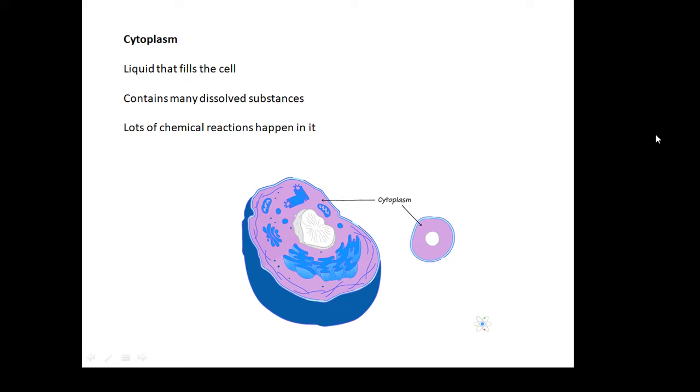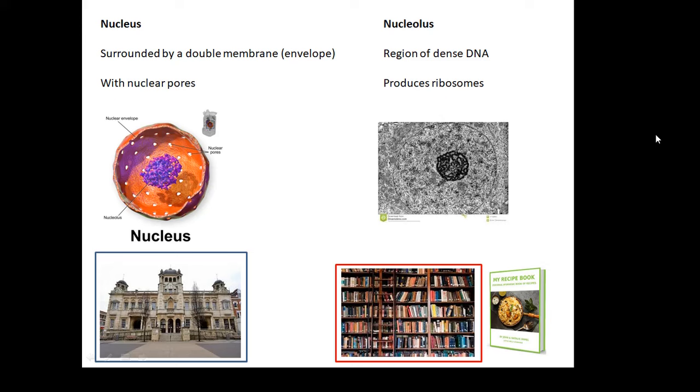The nucleus of the cell. If the cell is like a city, then the nucleus is the town hall. It's where all the decisions are made. It's surrounded by a double membrane. It has pores, nuclear pores, so that stuff can get in and out. That is the nucleus of the cell, the control center.